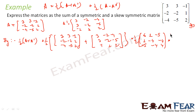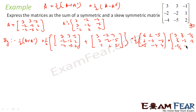Multiplying by 1/2: 6/2 = 3, 1/2, -5/2, 1/2, -4/2 = -2, -4/2 = -2, -5/2, -4/2 = -2, and 4/2 = 2. So the symmetric matrix is [3, 1/2, -5/2; 1/2, -2, -2; -5/2, -2, 2].